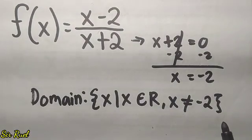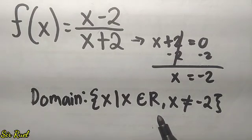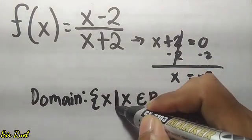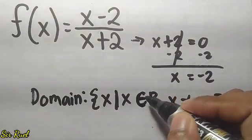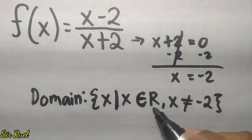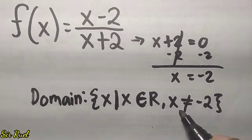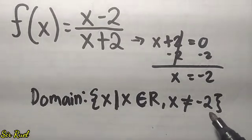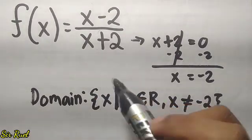This is how we write the answer using set-builder notation. The vertical line is read as 'such that.' So it reads: x such that x is an element of the real numbers where x is not equal to negative 2. This means all numbers can be the value of x except negative 2, because if x is negative 2, the function will be undefined.